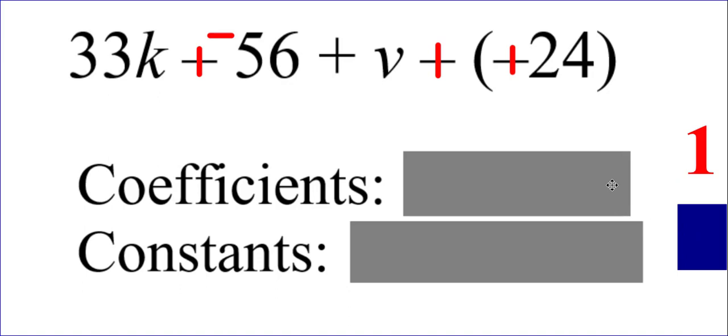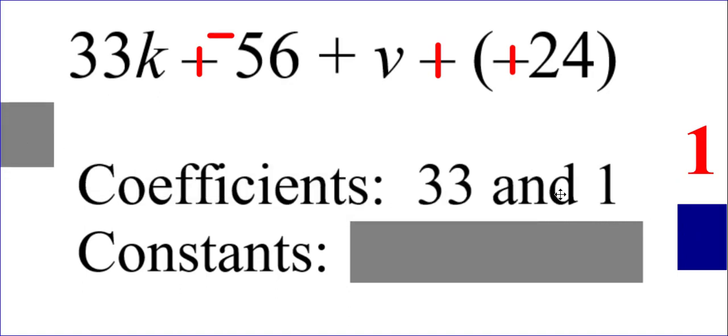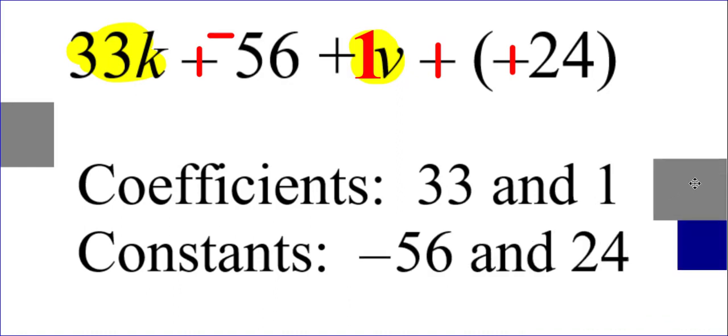Now, here's the other thing you need to realize. Every variable has a coefficient, whether you see it or not. And that's why the coefficients here were 33 and 1. The 33 obviously came from 33K. The 1 came from 1v. You know that 1 times v is the same as v. But it's necessary to realize that in order to identify the coefficient that was on the v. It's never 0. It's going to be 1 if you don't see a number next to the variable. The constants on this problem were negative 56 and 24.